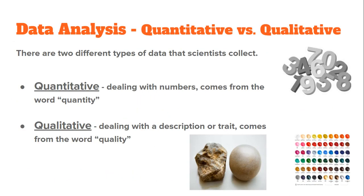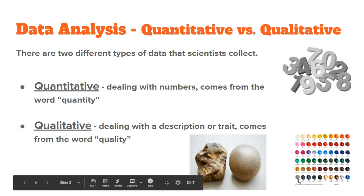When we're collecting data in a science experiment, it will be one of two types. It will either be quantitative, meaning dealing with numbers — it comes from the word quantity or amount, and it's an actual number you could write down, like distances or masses. The other type is qualitative, which deals with the description of an item or a specific trait. It comes from the word quality — things like color, shade, texture, smooth or rough, or jagged.